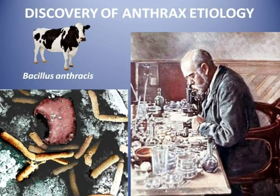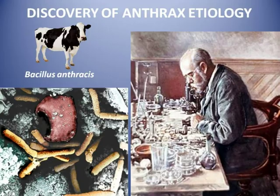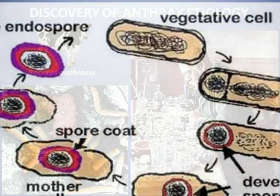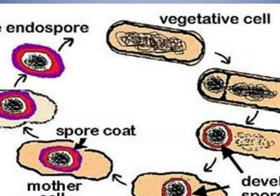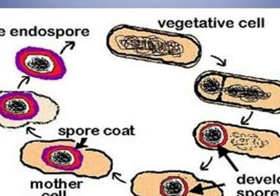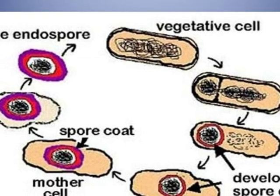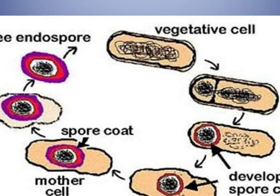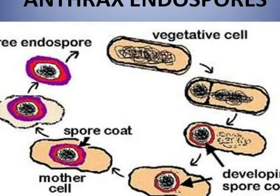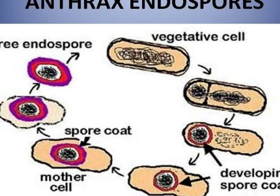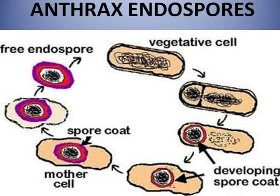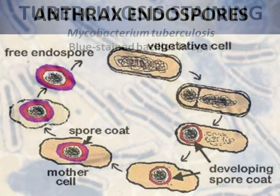However, mice inoculated with the blood of healthy cattle did not suffer from the disease. He had been growing several generations of the bacilli in pure culture when he noted that under adverse conditions the bacilli produced spores that could survive until the conditions were restored, giving rise then to new bacilli that could still cause anthrax.